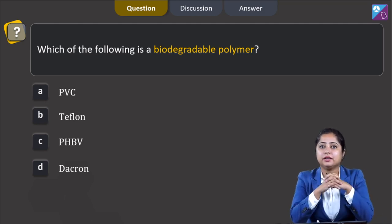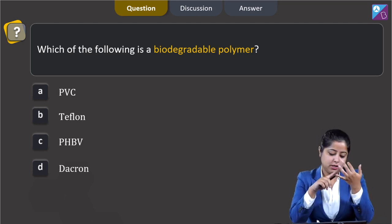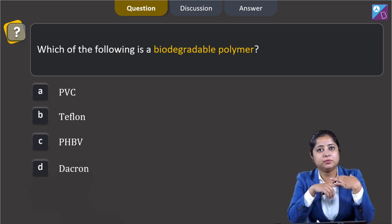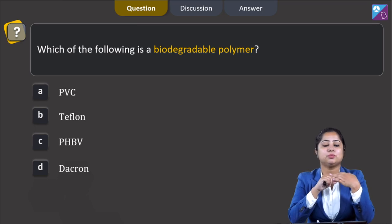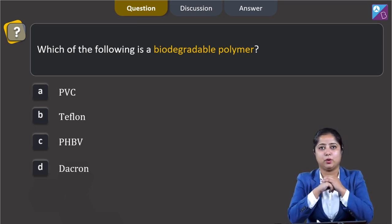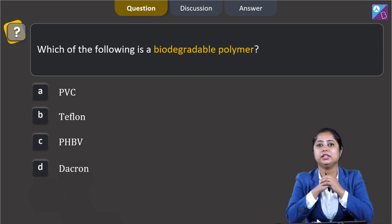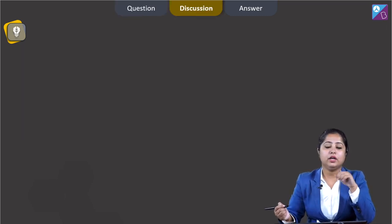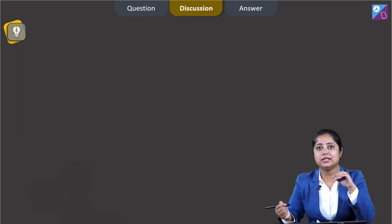Among the given options, PVC, Teflon, and Dacron are non-biodegradable polymers. On the other hand, PHBV is a biodegradable polymer. It undergoes bacterial degradation in the environment. It is a copolymer of 3-hydroxybutanoic acid and 3-hydroxypentanoic acid.